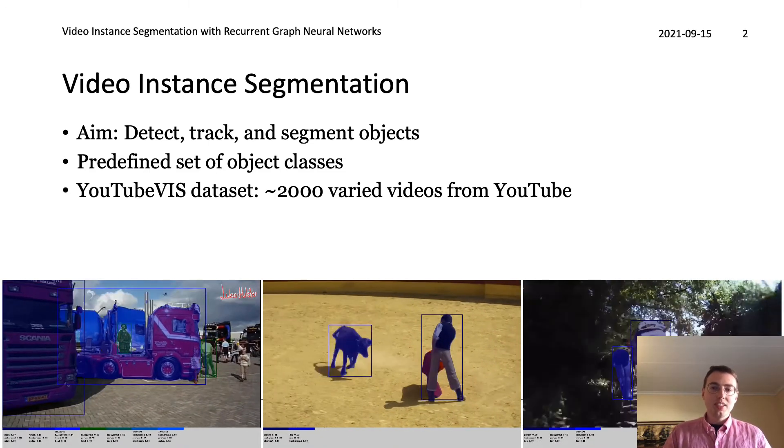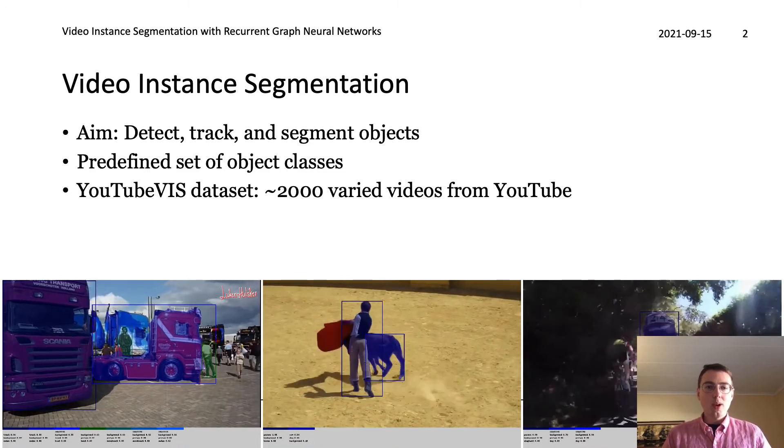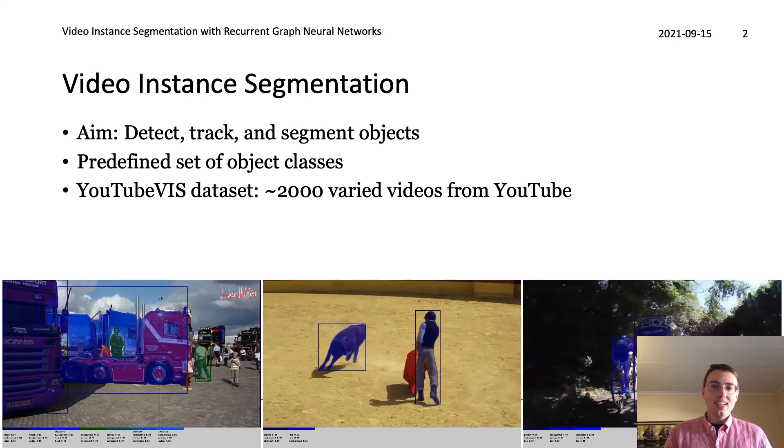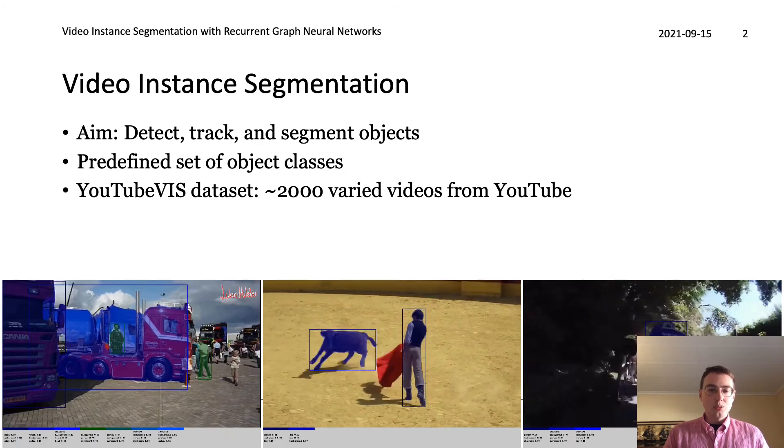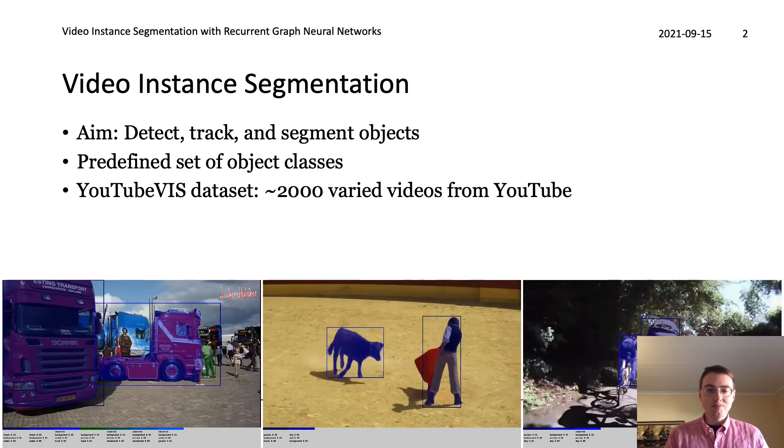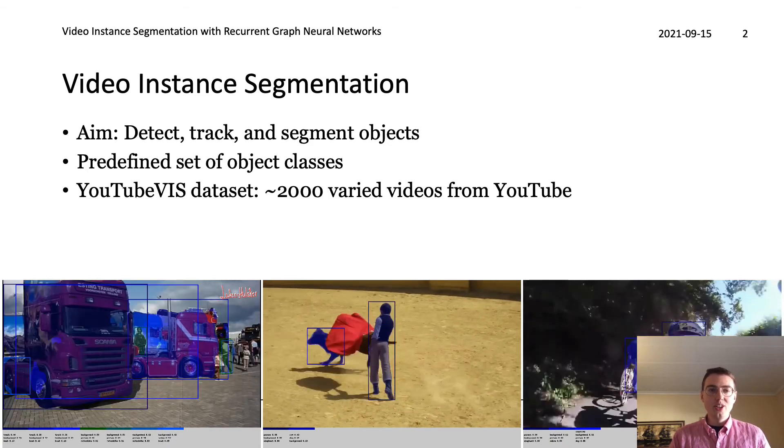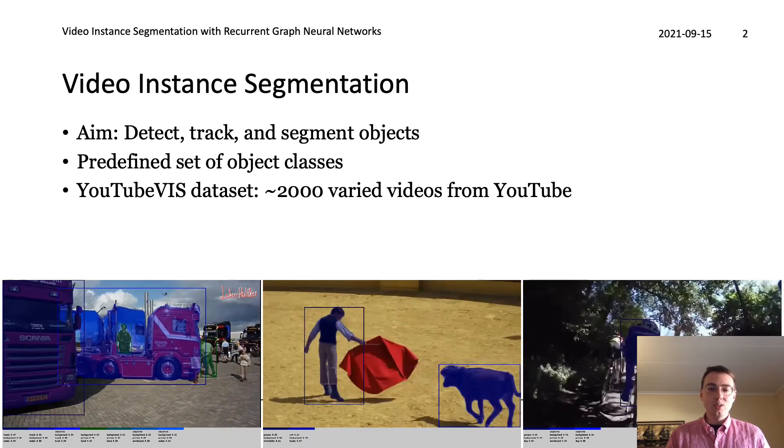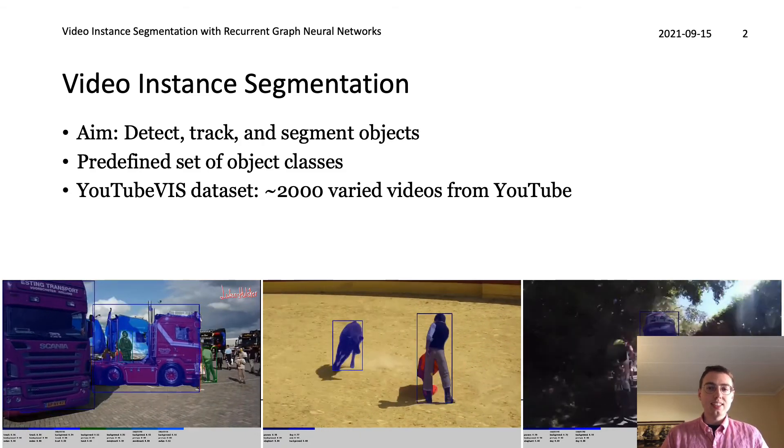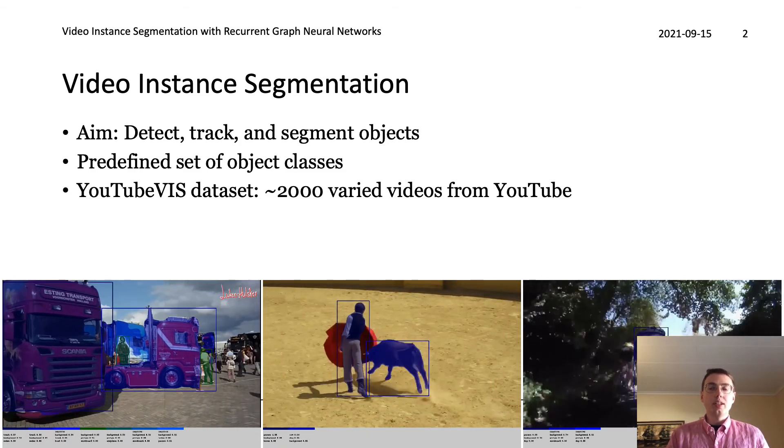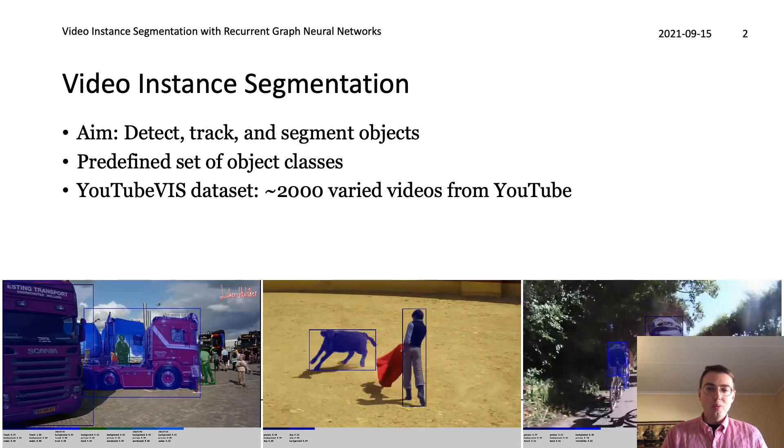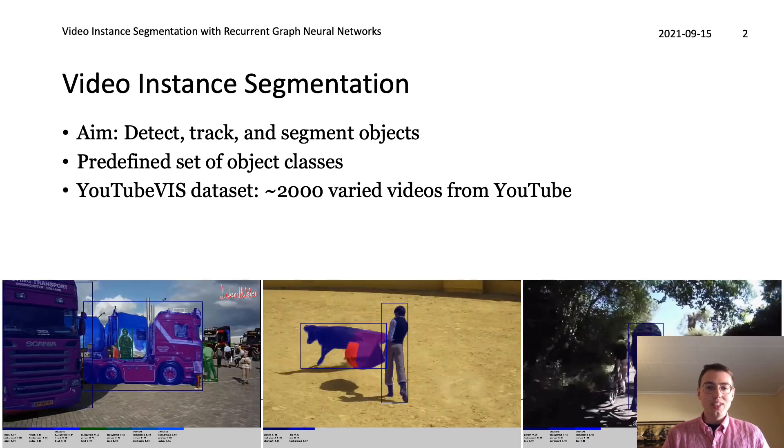Video instance segmentation is the computer vision problem where you're given a video and you want to detect, track and segment the objects in the video. It's a counterpart to instance segmentation in the video domain. Like instance segmentation, you have a predefined set of object classes. In this work we worked with the YouTubeVis dataset comprising around 2000 videos collected from YouTube. On the bottom there is a teaser of our approach running on three videos.